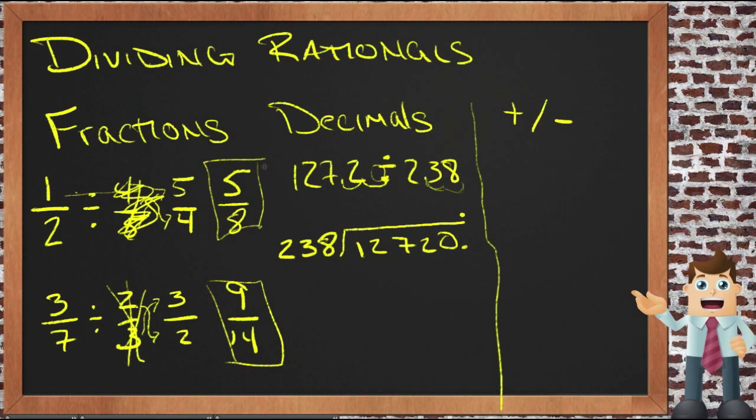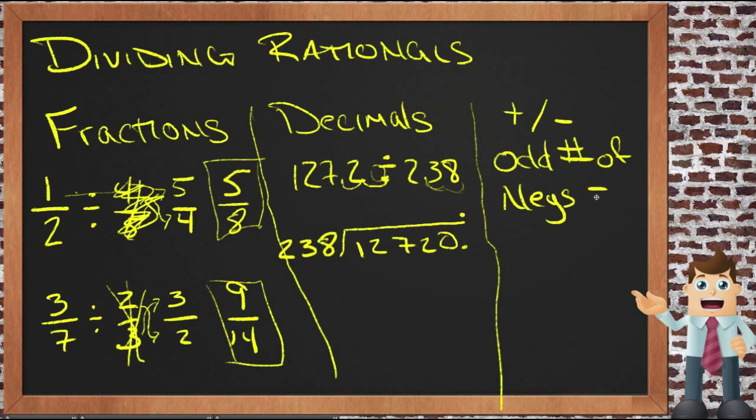Finally, to divide positive or negative numbers, we use the same rule we did for multiplication, and that is that an odd number of negatives is a negative answer. You can remember that by thinking that generally, if someone says you're odd, you would consider that a negative comment.